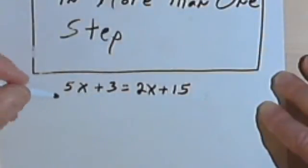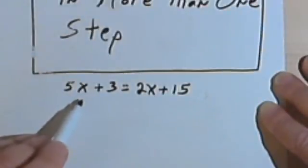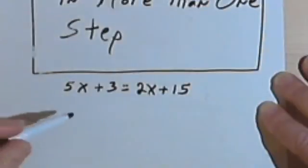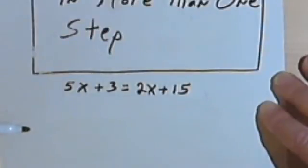And remember, when we want to solve an equation, what we do is we isolate the variable, in this case the x, on one side of the equation, and then we get a constant, some number, on the other side of the equation.